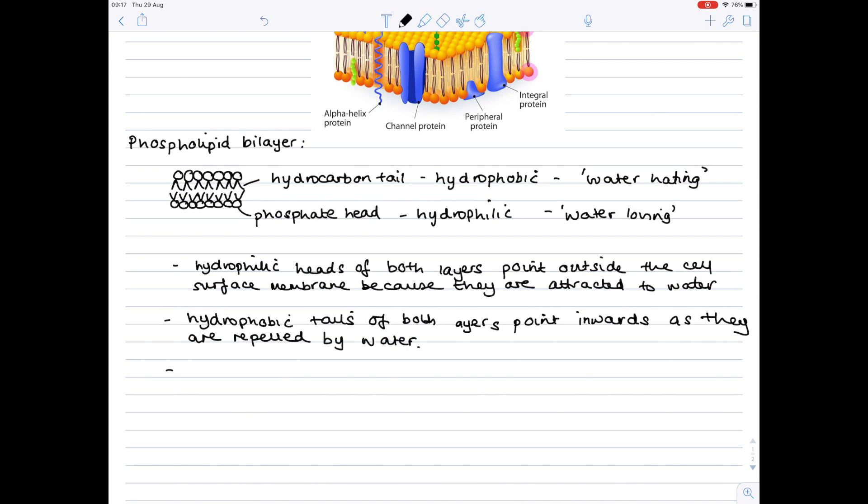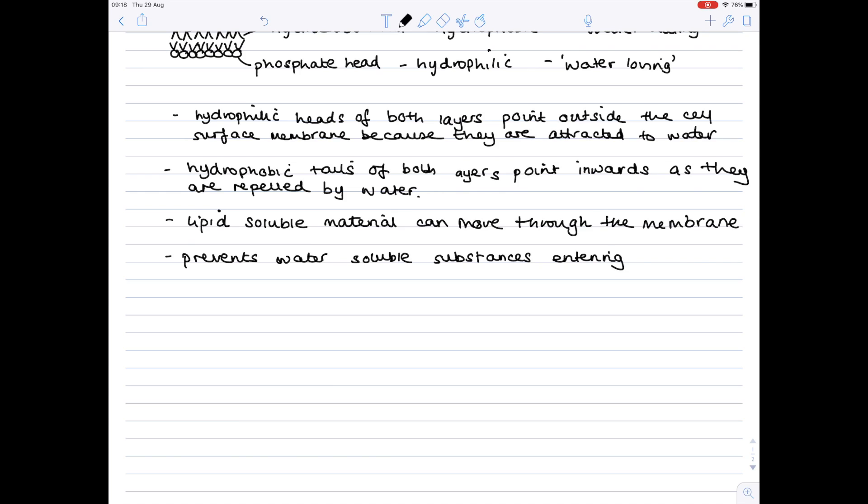Now, the phospholipid bilayer is essential because it allows lipid soluble materials to be able to move through the membrane. You often find that if lipids can move, you find that water-soluble things can't. So it therefore makes sense to say that water-soluble substances are unable to enter or leave the cell through the phospholipid bilayer, and that's where the role of proteins comes in. This layer makes the membrane flexible and self-sealing. So effectively, it can heal itself.